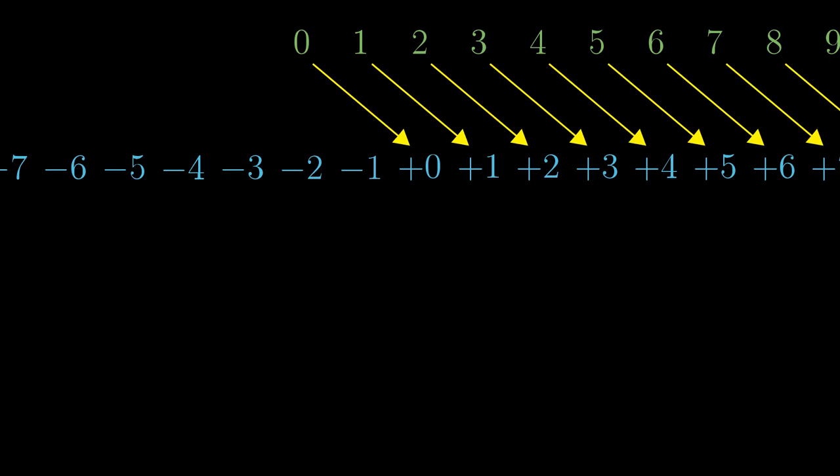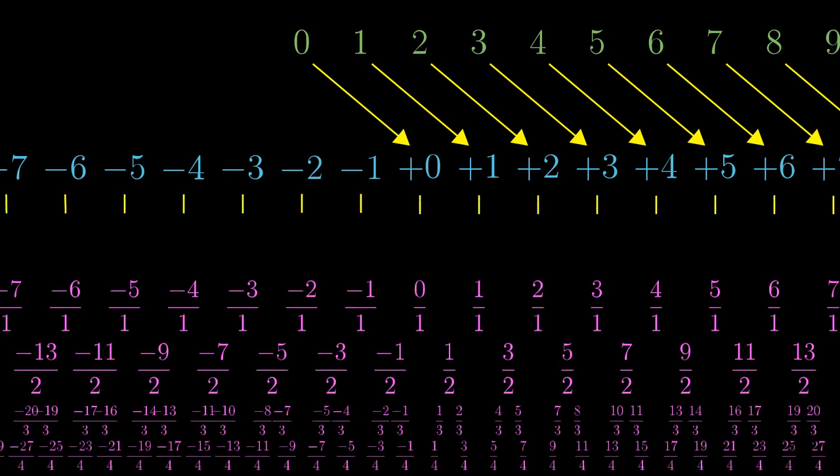It is even more apparent with rational numbers. Again, instead of completing integers with new numbers, we have built a new structure, where the fractions with denominator 1 are considered to be integers.